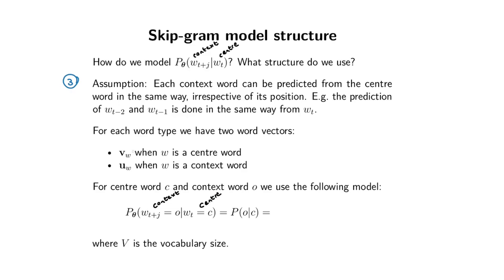We've got these continuous vector representations. V is some vector in a high-dimensional space, and U is also some vector in a high-dimensional space — these are our word embeddings. We have center word embeddings and context word embeddings. To model this probability, we're going to take the dot product between the context word embedding and the center word embedding.